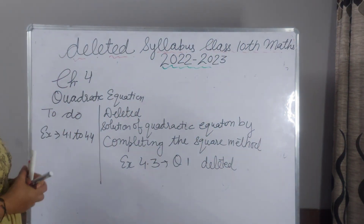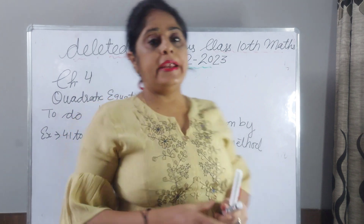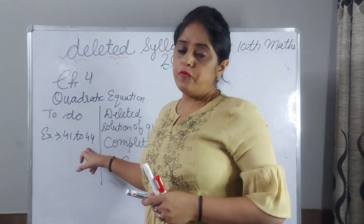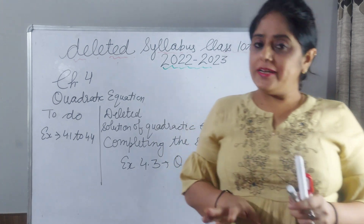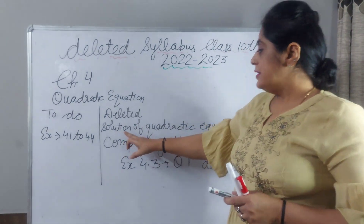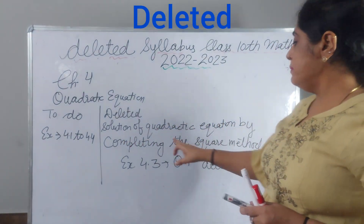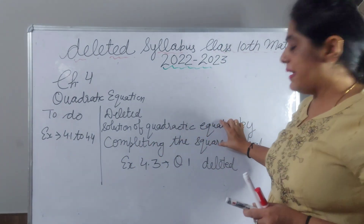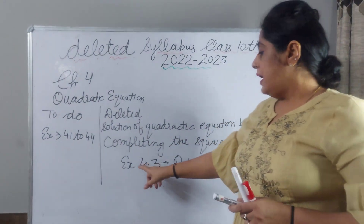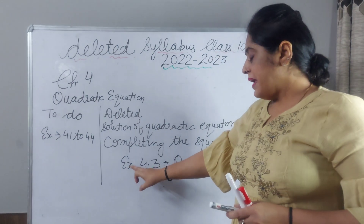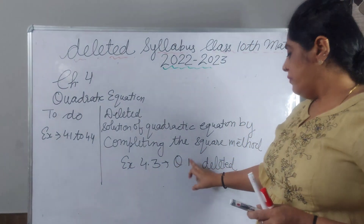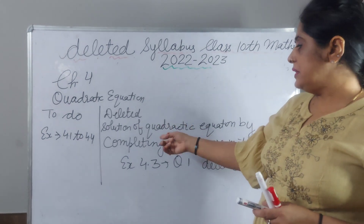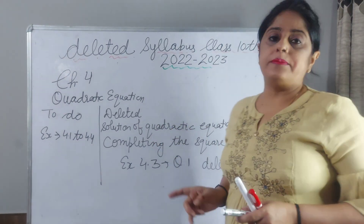Chapter 4: Quadratic Equations. You have to do exercise 4.1 to 4.4. What is deleted from your syllabus: solution of quadratic equations by completing the square method. Only this method is deleted, and you have to leave exercise 4.3 question 1 only, because it is related to the completing the square method.